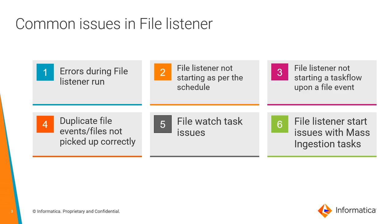The third issue is the file listener not starting a task flow upon a file event. The start of a task flow can be configured with a file listener, so if the file listener has identified a file but has not started a task flow, that comes under issue three. The fourth one is duplicate file events or files not picked up correctly — one file picked up twice, or files not getting picked up as expected.